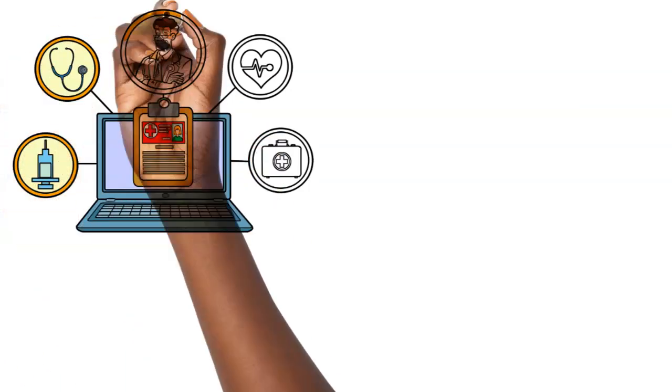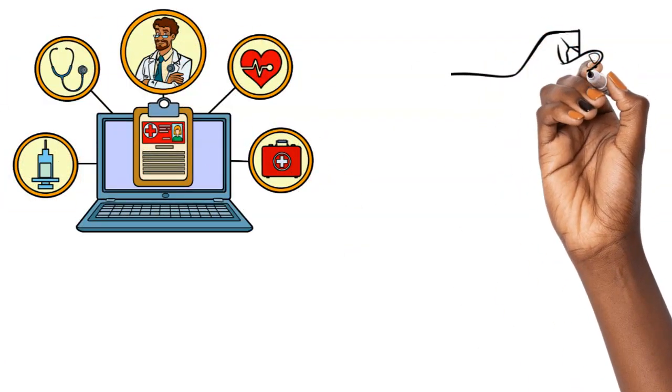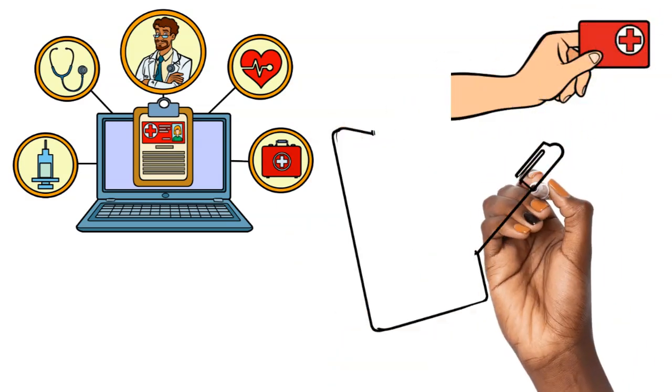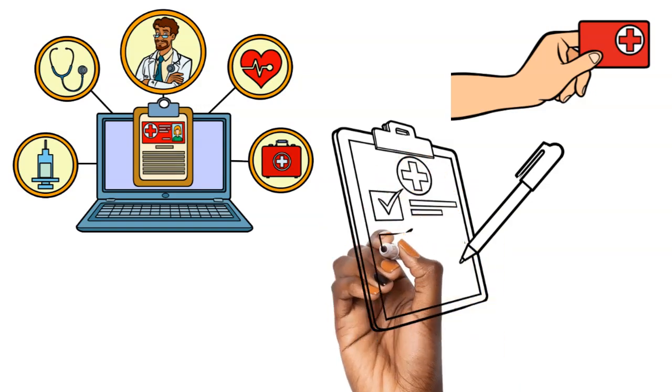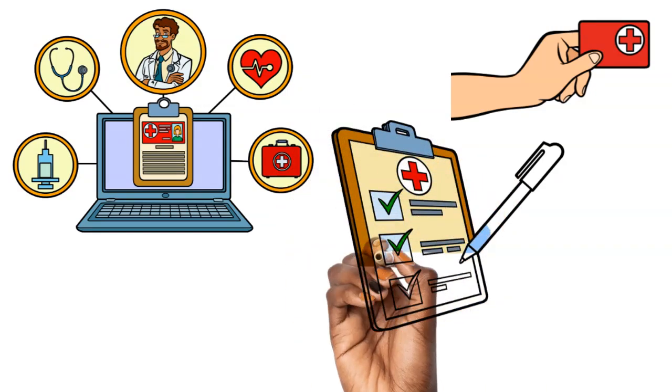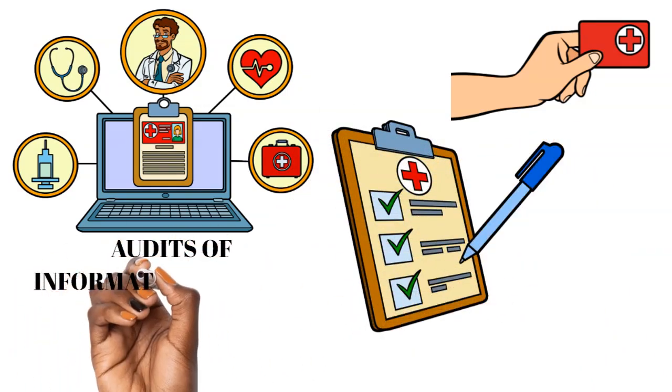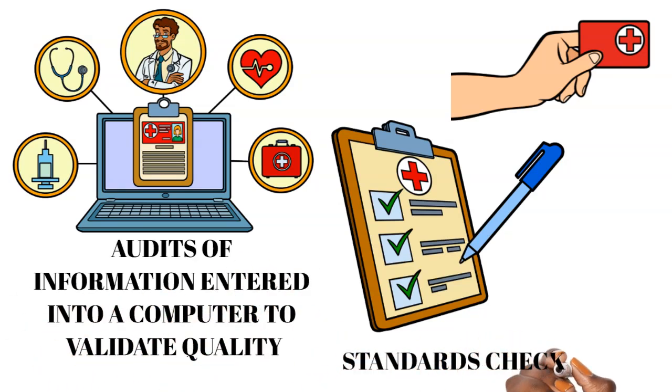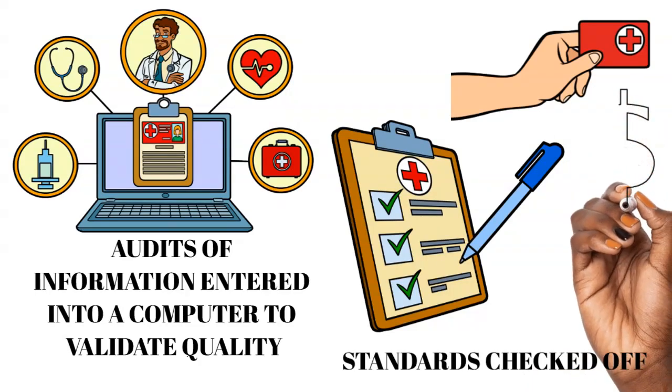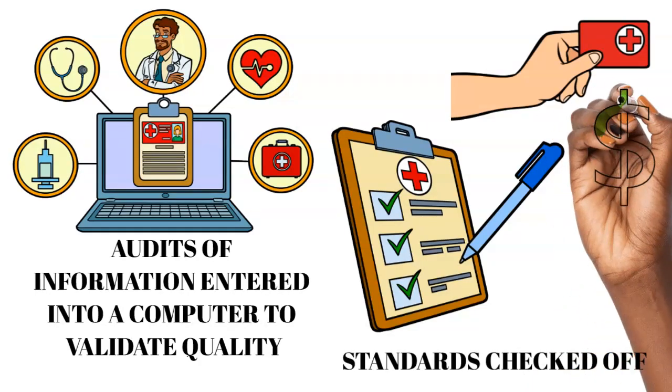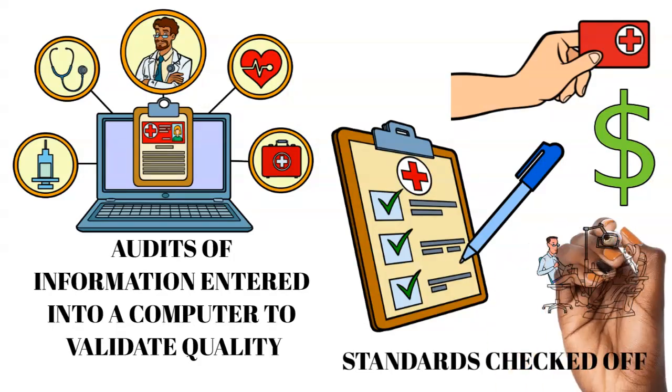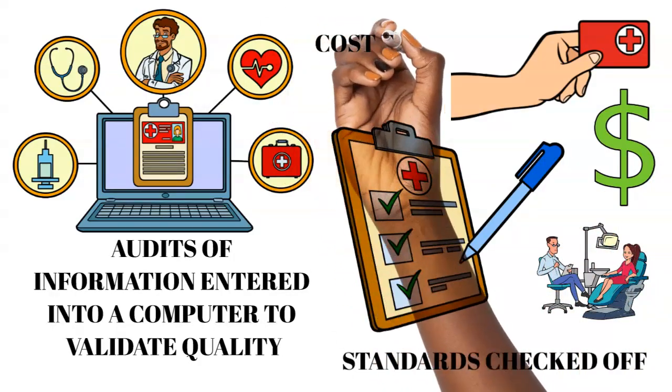This type of data validation ensures that if improper payments are made to those private insurance companies or those organizations that perform services for Medicare, that that money is recouped. And that is done by looking at the standards, checking them, and making sure there are no overpayments. So we're validating that information for Medicare and RADV audits.